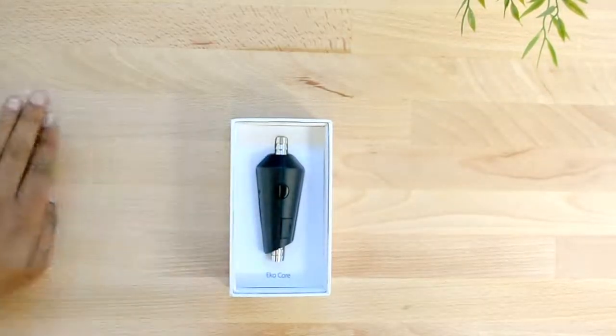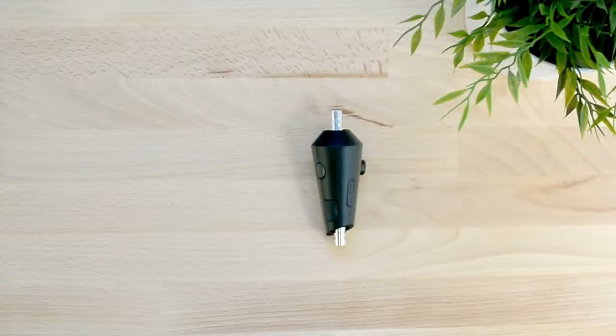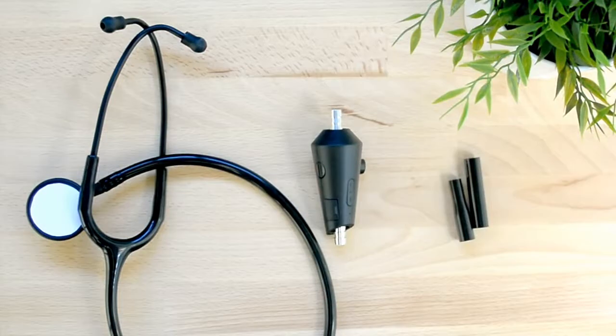Now let's connect your ECHO-Core attachment to an analog stethoscope. We will start by attaching the ECHO-Core to a small tube stethoscope and then show you how it connects to a large tube stethoscope. We have included a large and small adapter to fit stethoscopes of any tubing size.